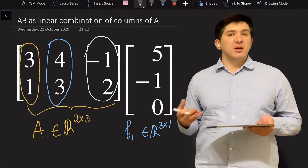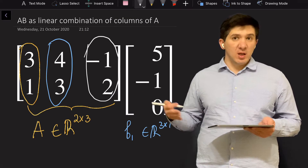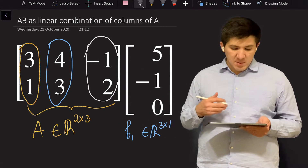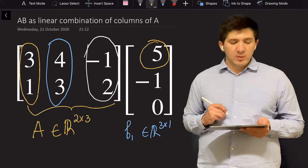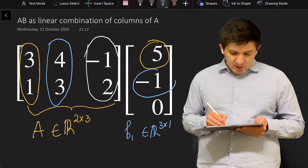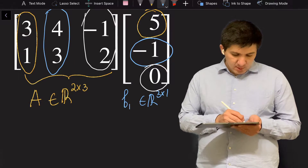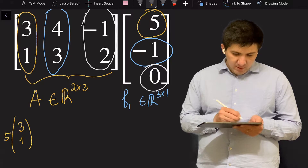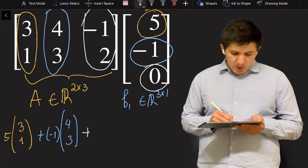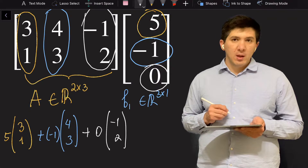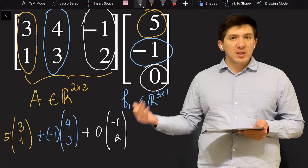Now I'm going to find a linear combination of the three columns. A linear combination of three vectors is when I multiply the three vectors by three constants and add them. Those three constants come from the rows of the second matrix. So the first column of matrix A is going to be multiplied by the first element of vector B, the second column by the second element, and the third column by the third element. So I write this as: [3, 1] times 5, plus [−1, 3] times −1, plus [−1, 2] times 0.